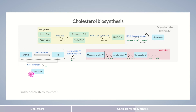In the next reaction step, another IPP unit binds to the molecule, producing farnesyl pyrophosphate, in short FPP. The enzyme responsible is FPP synthase. Farnesol is also an essential oil that is mainly found in roses.